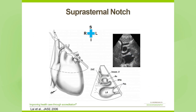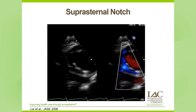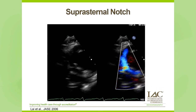The suprasternal notch views are also important in congenital imaging. In the suprasternal notch three-o'clock view, we can see the left innominate vein, the right SVC, transverse aorta, right pulmonary artery, and the left atrium. This view is important because many adult congenital patients have a single ventricle repair which involves a Glenn shunt — the SVC is disconnected from the right atrium and connected to the RPA. Here is an example of a patient with a Glenn shunt demonstrating an unobstructed Glenn shunt leading into the pulmonary artery.